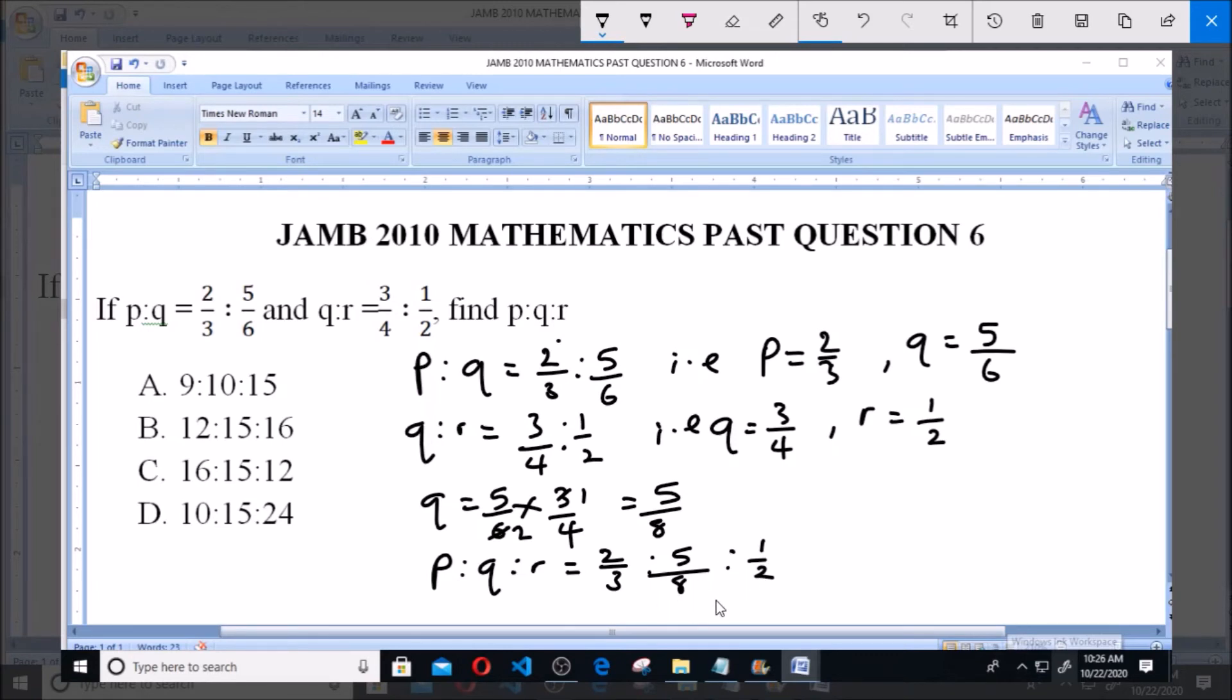If we can make the denominators have the same base, that is having the same LCM, then we can pick the numerators as the ratio.